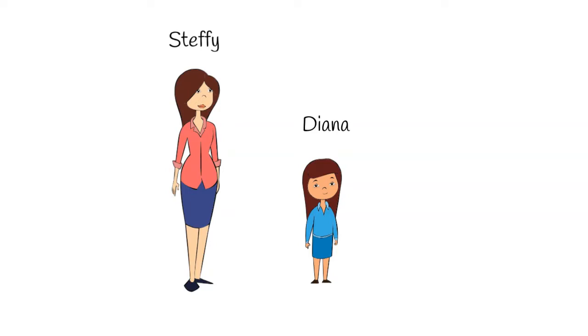Steffi reinforces appropriate communication in the form of PECs by giving Diana what she asks for. When Diana has a tantrum, the plan is to limit attention and deny access to those things that she wants.